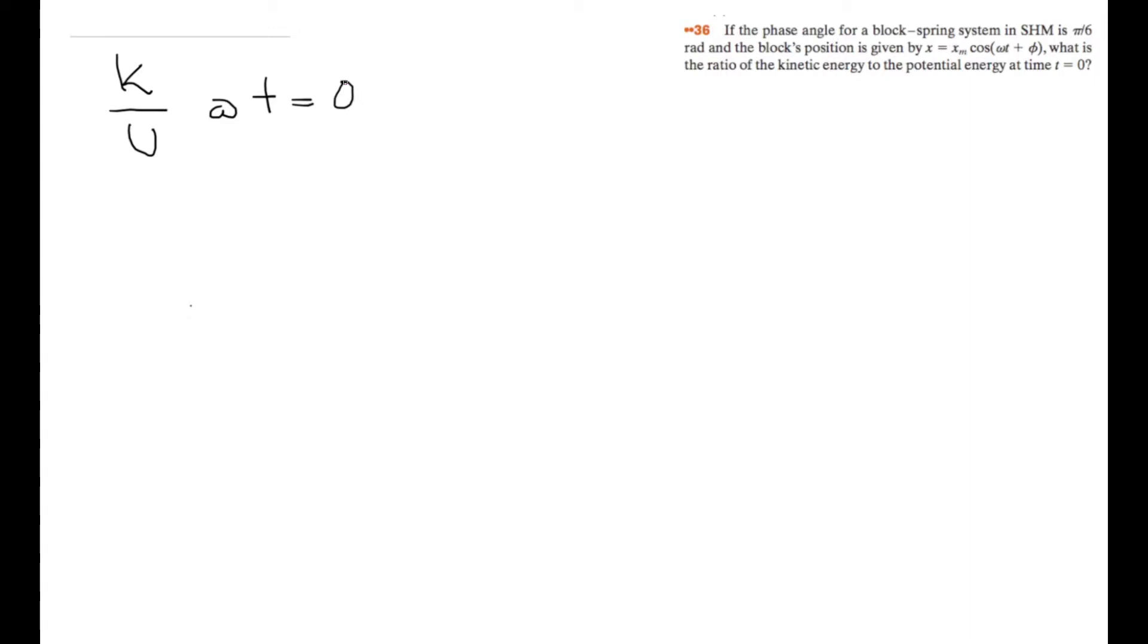Normally, at t equals 0, we'll just draw out the graph here. We have maximum amplitude at t equals 0. So that would be maximum potential energy and 0 kinetic energy, so the ratio would be 0.